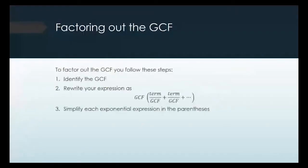So, factoring out the GCF. Now that we know how to find the GCF, we factor it out following these steps. First, identify what the terms have in common. Then rewrite the expression with the GCF in front, and in parentheses take each term and divide it by the GCF. Factoring basically means we are dividing out the common factor.